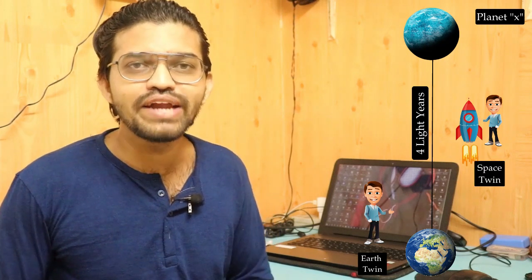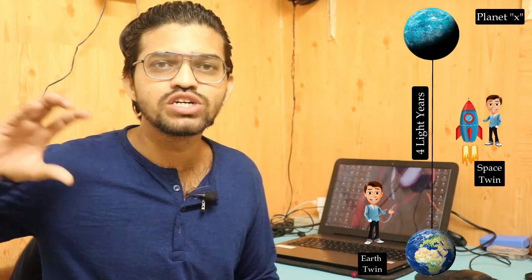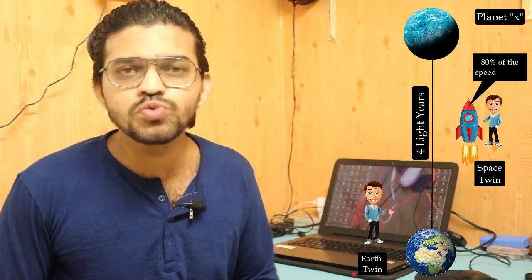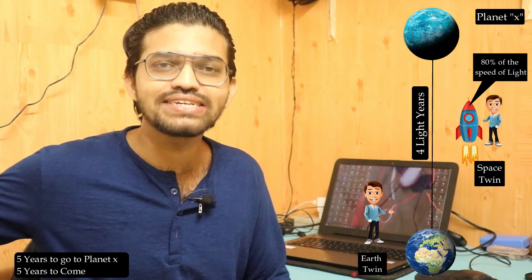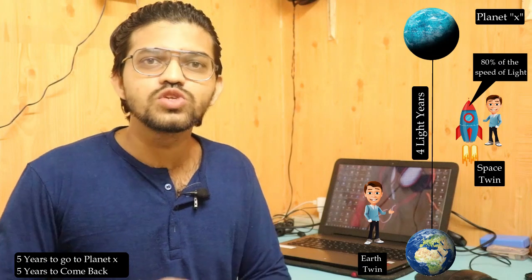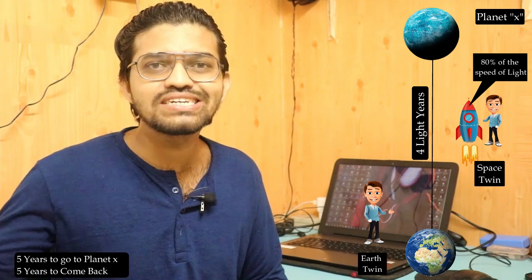Suppose there are two brothers. The first brother remains on the Earth, and the second brother moves into space towards planet X, as we have seen in our previous videos. Planet X is about four light years away from Earth. The brother who remains on Earth we name the Earth twin, and the brother who moves into space we name the space twin. The space twin moves into space towards planet X at 80% the speed of light. It will take around five years to reach planet X and five years to come back. So as per the Earth twin, the space twin spends ten years in space.